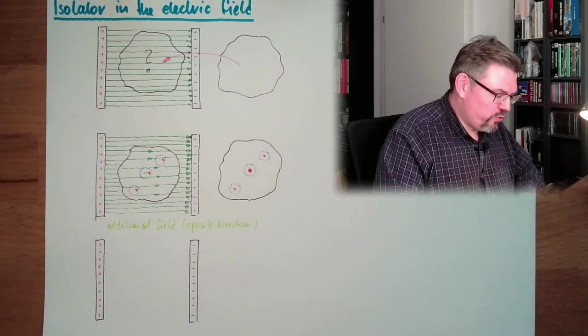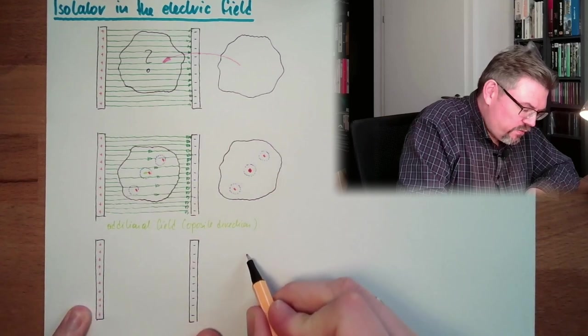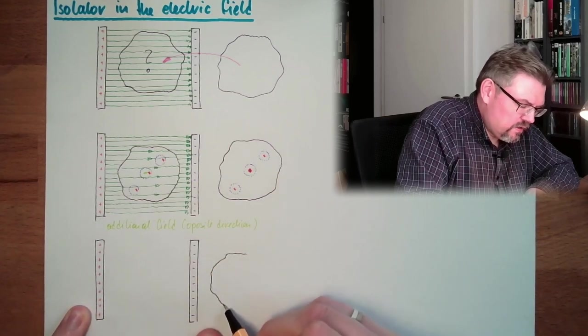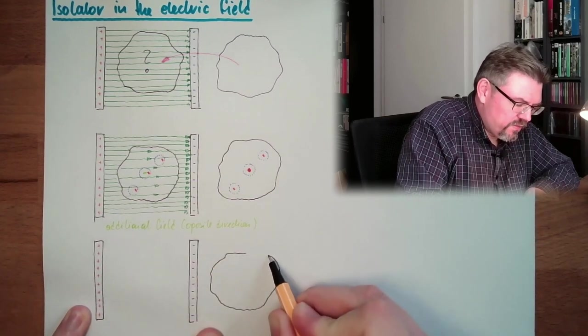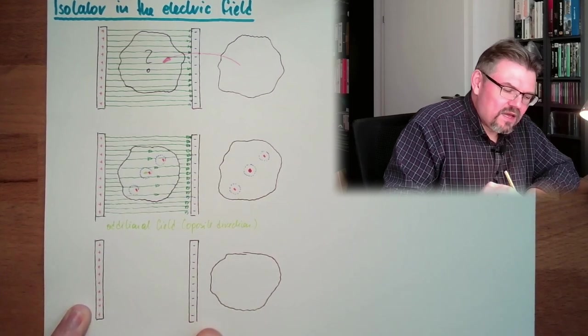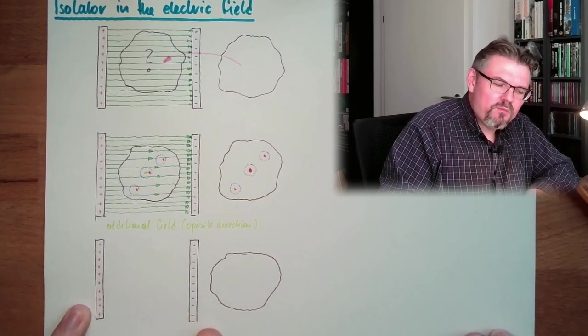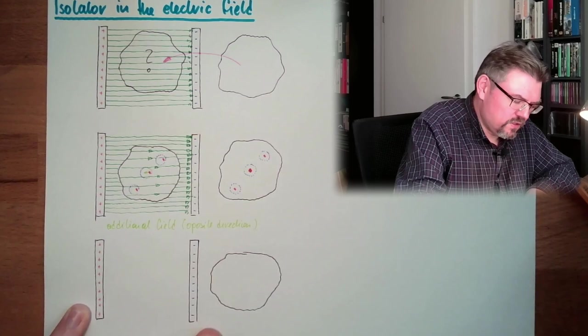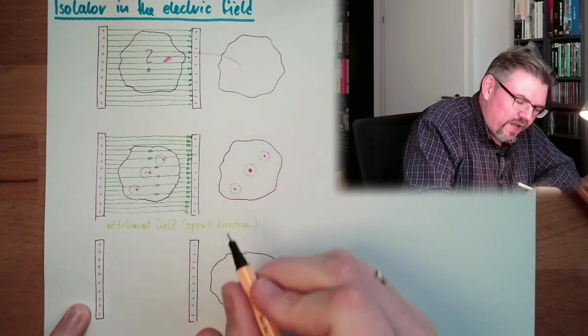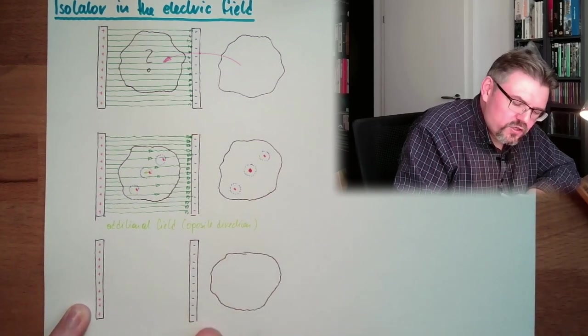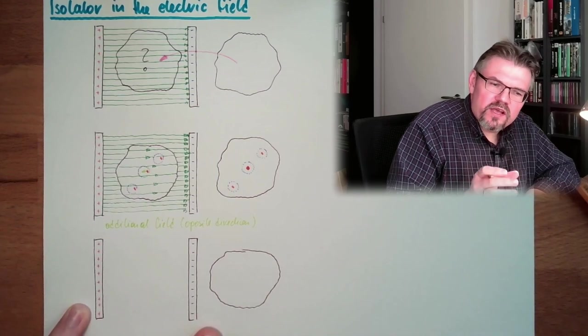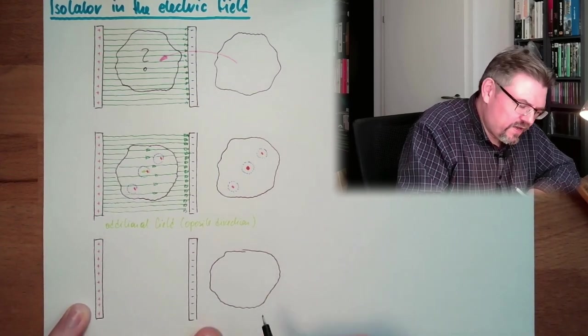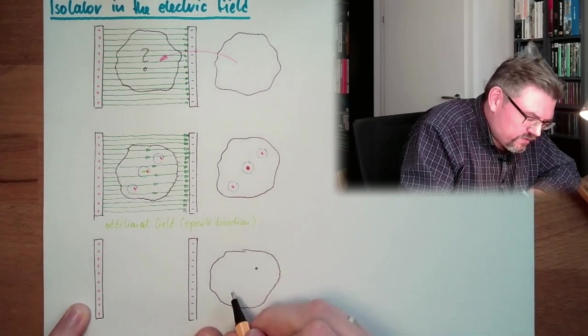So that's one mechanism which might happen. And then I also show you a second mechanism. Let's say we have a different material, and this different material is built of dipole molecules. So it's not only atoms, but molecules. And usually dipole molecules, there's electric binding and so on. So they have one negative side.